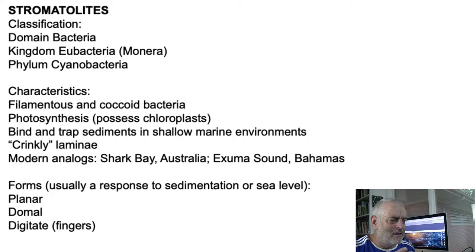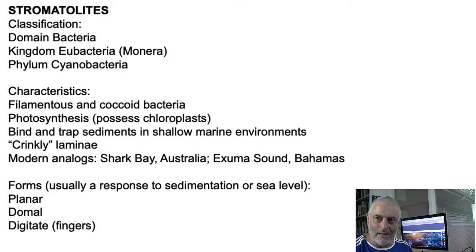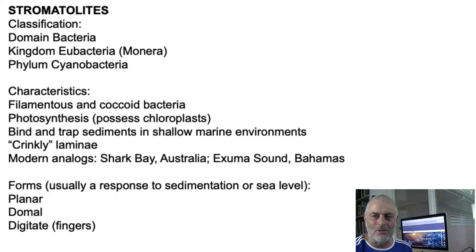Stromatolites are not just ancient — they've been around for almost three billion years and hit their peak in the Proterozoic. But then they took a hit when living organisms began to prey upon them, grazing off the filaments and coccoid algae that stuck up out of the stromatolites — things like snails.